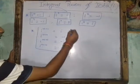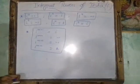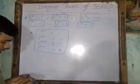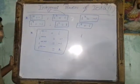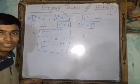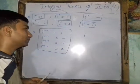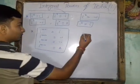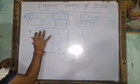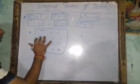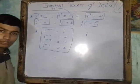So we get these rules from these observations. To summarize: i to the power 4n plus 1 gives i, i to the power 4n plus 2 gives minus 1, i to the power 4n plus 3 gives minus i, and i to the power 4n plus 4 gives 1. These rules apply when we need to investigate higher powers of i.